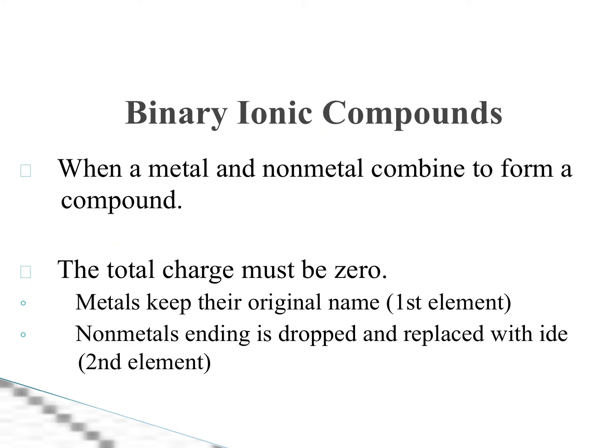Binary ionic compounds. Keyword, ionic. Remember, with ionic, we have a metal attached to a nonmetal. We have a cation attached to an anion. A positive attached to a negative charge. So we still got to keep it in our format that we learned with ionic compounds. We know that the metal comes first. The nonmetal second in our chemical formula.